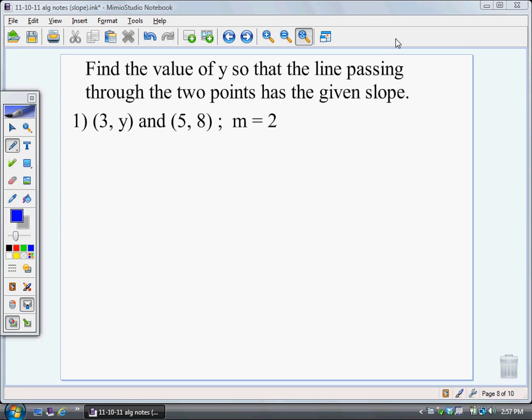In this video I'm going to go through a couple of examples where you're going to be finding the missing y coordinate when you're given the slope. So here are the instructions. It says to find the value of y so that the line passing through the two points has the given slope.